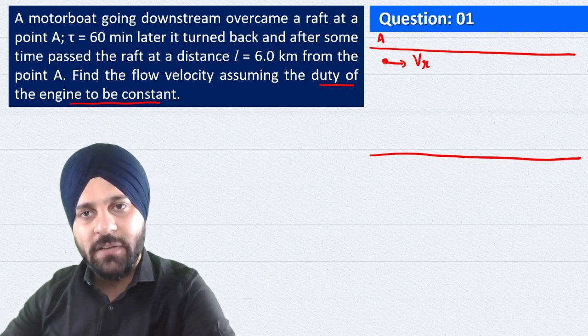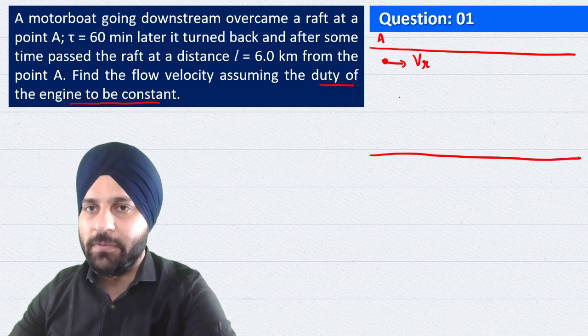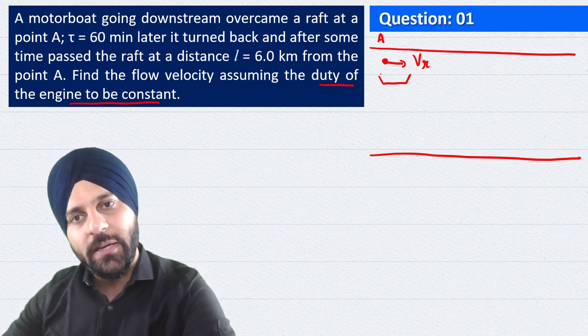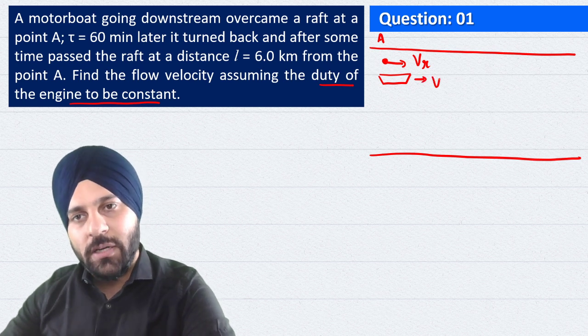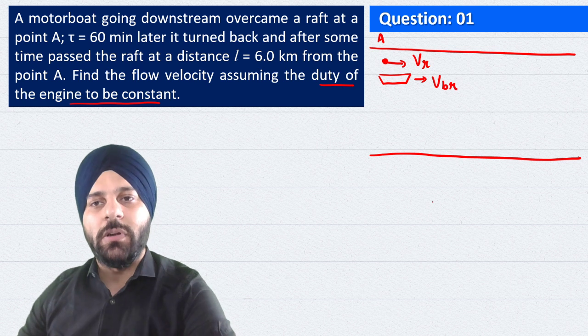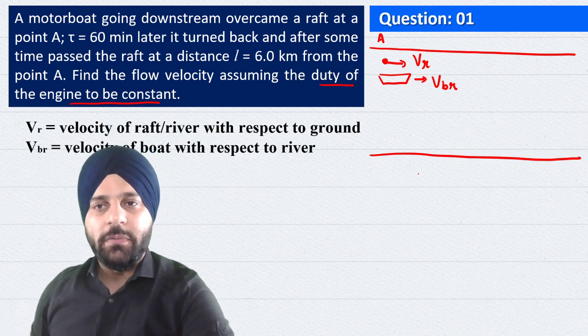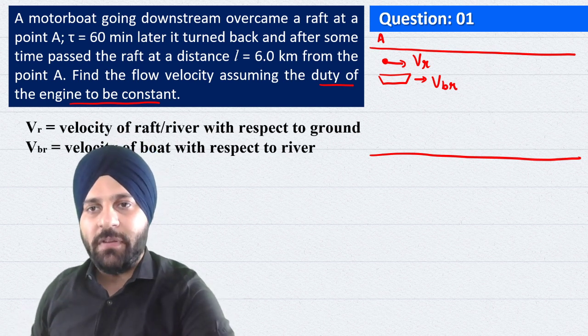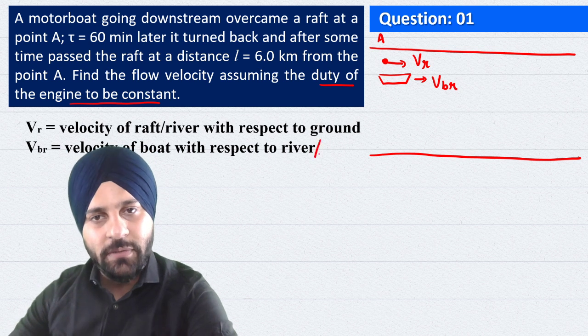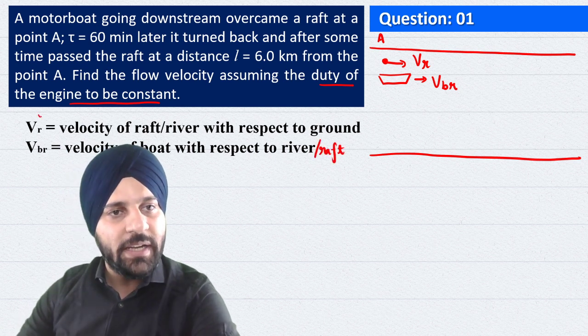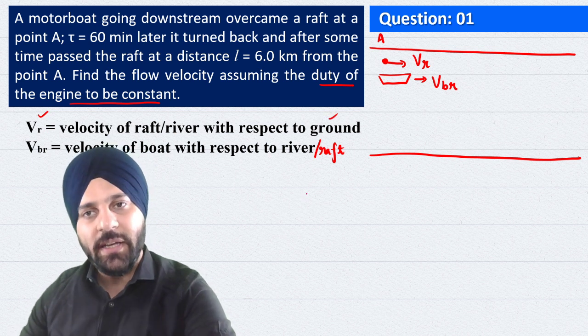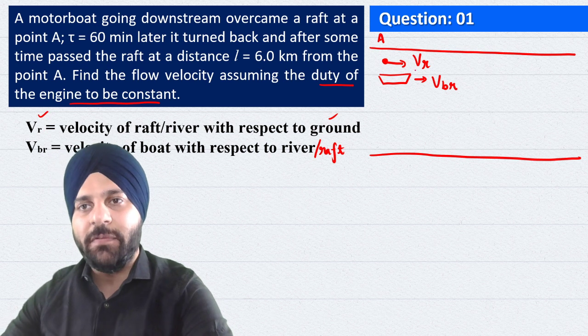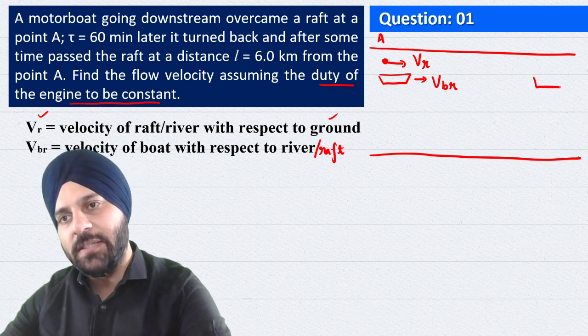The velocity of the boat with respect to the river and the raft is VBR, and the velocity of the raft with respect to the ground. Now the question has provided after 60 minutes, the boat will come to the boat after 60 minutes.